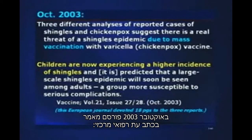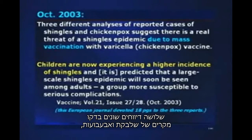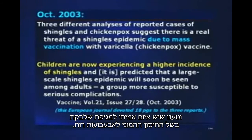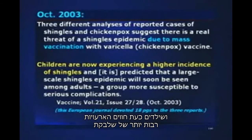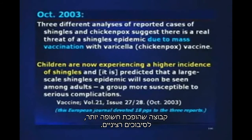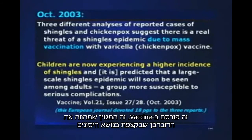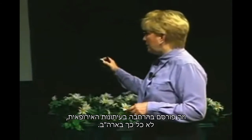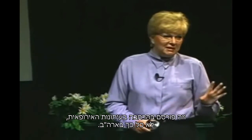In October 2003, an article published in a mainstream medical journal reported three studies suggesting a real threat of a shingles epidemic due to mass vaccination with the chicken pox vaccine. Children are now experiencing a higher incidence of shingles, and a large-scale shingles epidemic among adults is predicted. This was published in the journal Vaccine — a top-of-the-line vaccination journal — and received considerable press in Europe, though not much here.